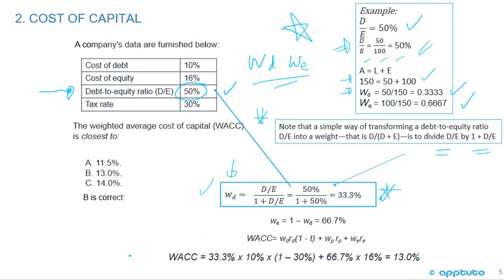Now that we have our weights, we can calculate the weighted average cost of capital. For debt: 33.3% times the cost of debt times one minus the tax rate. Plus the weight of equity times the cost of equity. That gives us 13%. So B is correct.